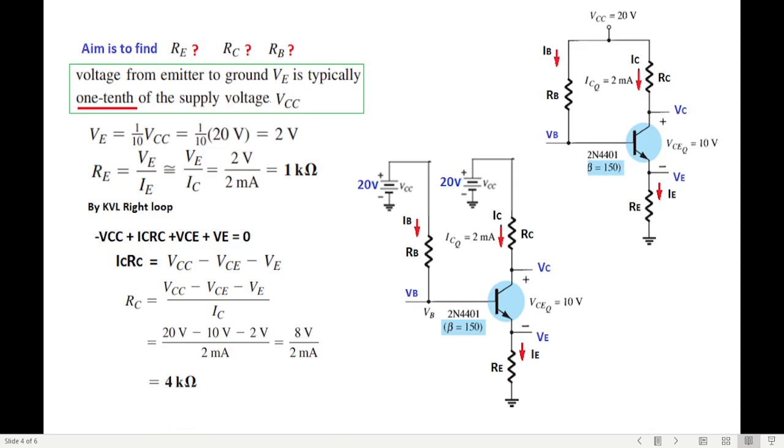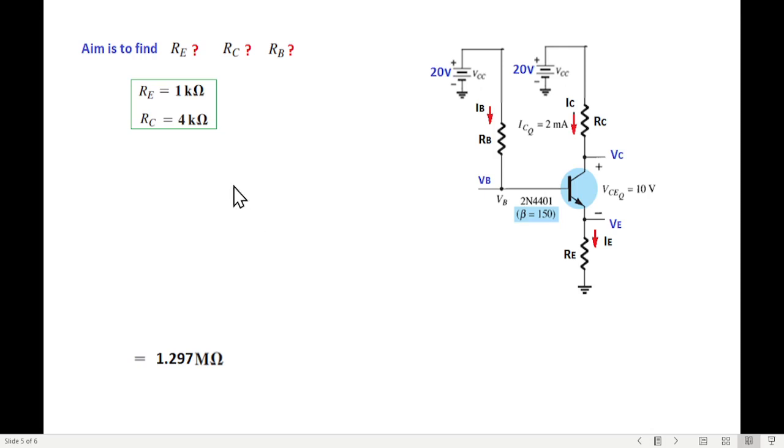Now let's calculate RB. Now to calculate RB, we use the left loop, that is the base-emitter loop. So KVL: -VCC + IBRB + VBE + VE = 0. Now we separate IBRB, then RB becomes this formula. VCC we know is 20, VBE is 0.7 always, VE we calculated 2.